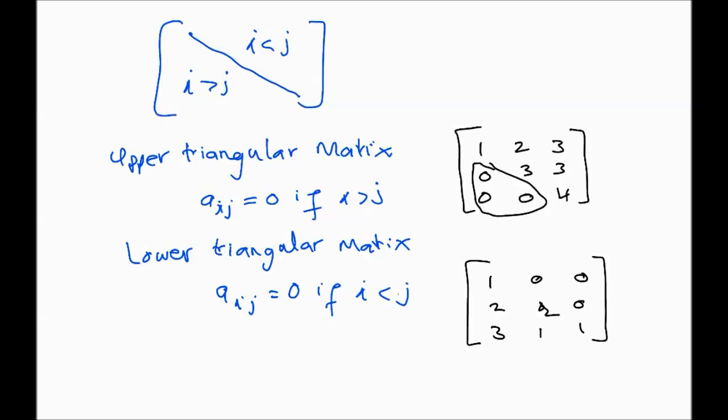Connecting back to what we've been studying: the reduced row echelon form (RREF) is in fact an upper triangular matrix with the diagonal entries all ones, if achievable. Also, the transpose of a lower triangular matrix gives you an upper triangular matrix, and the transpose of an upper triangular matrix gives you a lower triangular matrix.